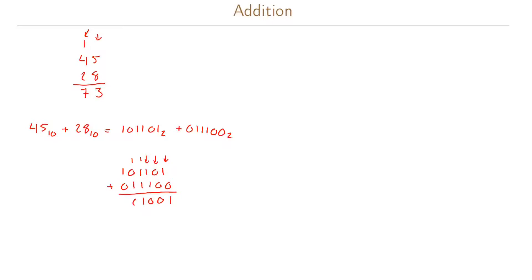...in the next column. We have 0 with a 1, then 0, and then a 1, giving us the result 1001001 in...